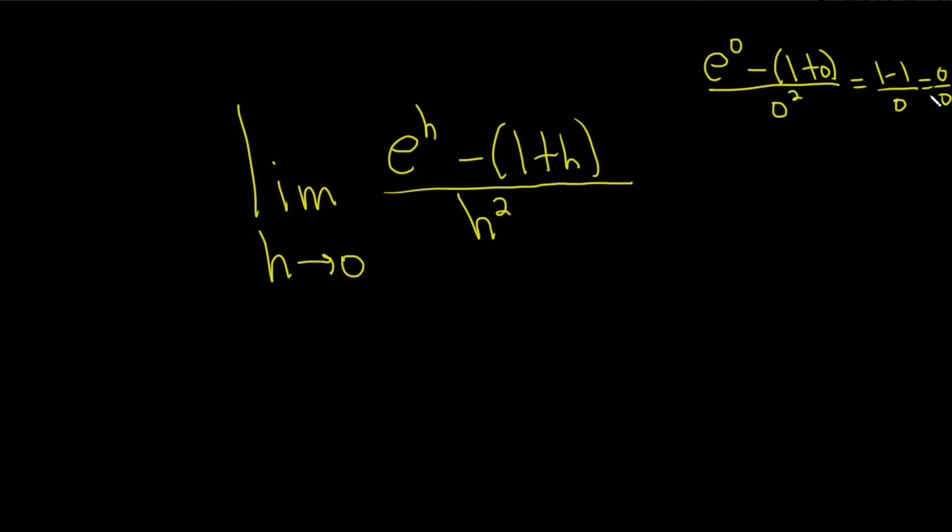L'Hopital says that whenever you have 0 over 0 or infinity over infinity in a limit, you can just take the derivative of the top and the derivative of the bottom.